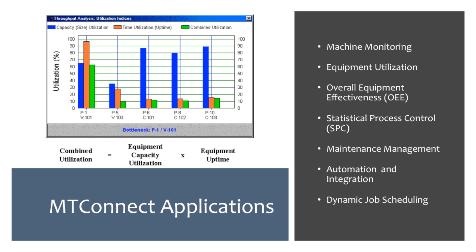Overall Equipment Effectiveness, or OEE, is a measurement that combines the utilization of the equipment along with an assessment of how efficiently product is being produced. OEE is an effective tool for analyzing inefficiencies on the shop floor and for measuring the effectiveness of process changes designed to improve shop operations.